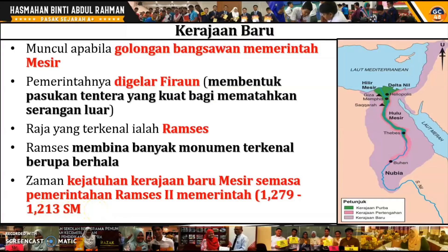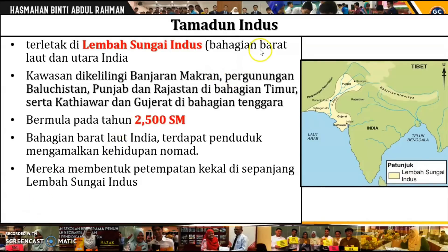Itu tentang Kerajaan Mesir Purba. Ingatlah bahawa Kerajaan Mesir Purba mempunyai tiga tahap sistem pemerintahan: Kerajaan Purba, Kerajaan Pertengahan, dan Kerajaan Baru. Kita pergi pula kepada Tamadun Indus. Tamadun Indus terletak di lembah Indus, iaitu di bahagian barat laut dan utara India. Perkembangan tamadun ini berlaku di sepanjang Sungai Indus.